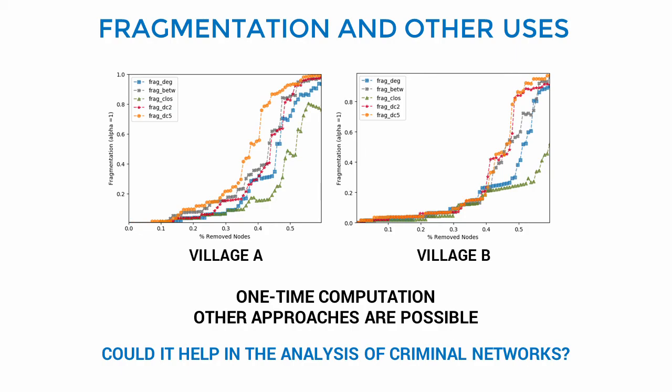So compared to closeness, betweenness and degree centrality, distinctiveness is promising. In this static calculation example, we can reach good fragmentation levels, selecting nodes by D2 or D5, which are the orange and red curves.